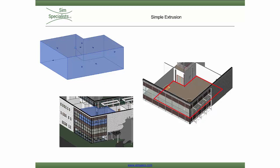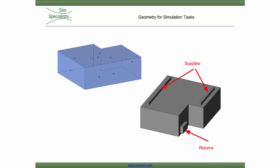The extrusion is created with a sketch that references the inner walls. To simulate air movement in the space, we'll need to define supplies and returns. Those can also be created with simple features that capture their size and location.